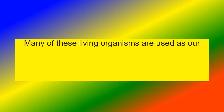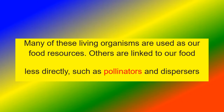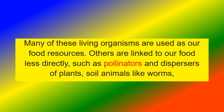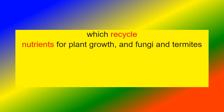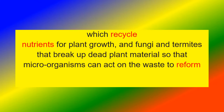Many of these living organisms are our food resources. Others are linked to our food less directly, such as pollinators and dispersers of plants, soil animals like earthworms which recycle nutrients for plant growth, and fungi and termites that break up dead plant material so that microorganisms can act on it to reform soil nutrients.